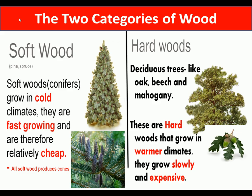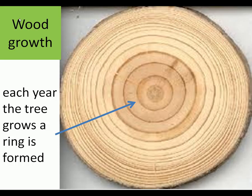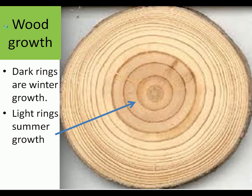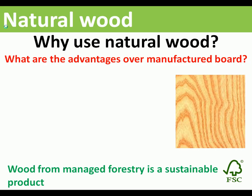There are two categories of wood: softwood and hardwood. Softwood trees are Christmas tree shapes — they grow in cold climates, are fast growing, and produce cheap timber. Most of the wood used in Key Stage 3 is softwood, such as pine or spruce. Hardwoods are deciduous trees that lose their leaves in winter; oak is an example. Each ring on a tree represents one year's growth — in winter the tree is dormant, in summer it grows fast.